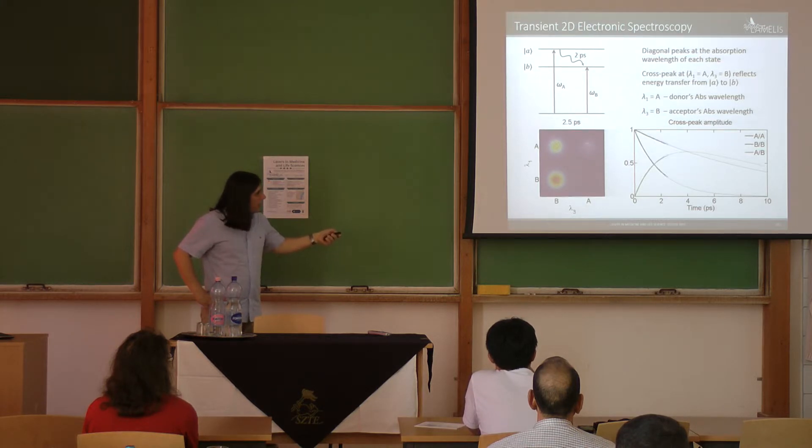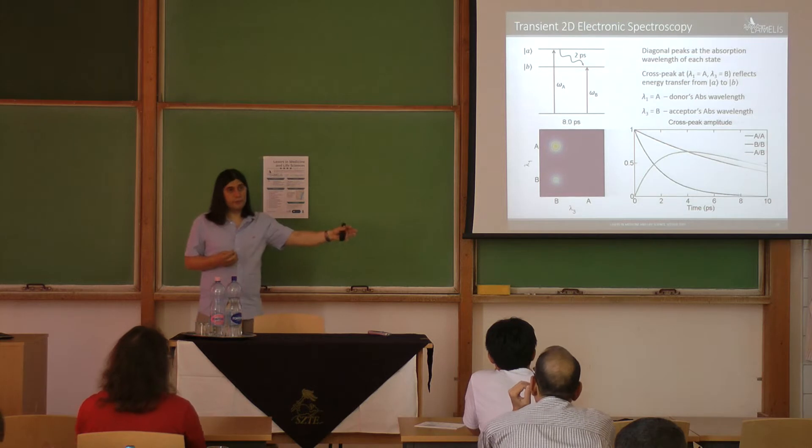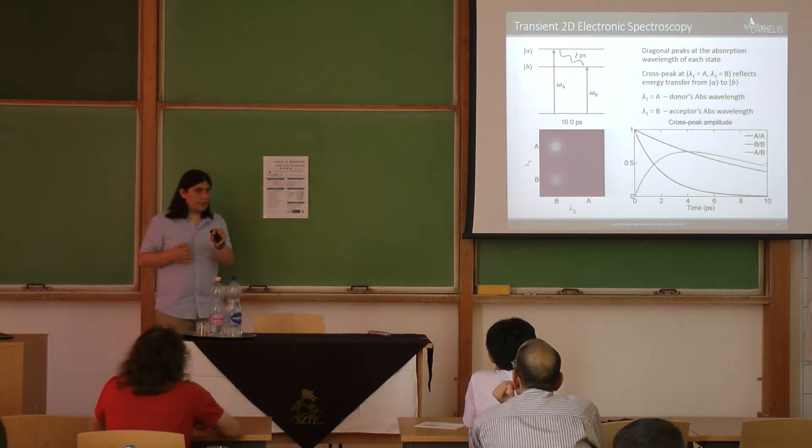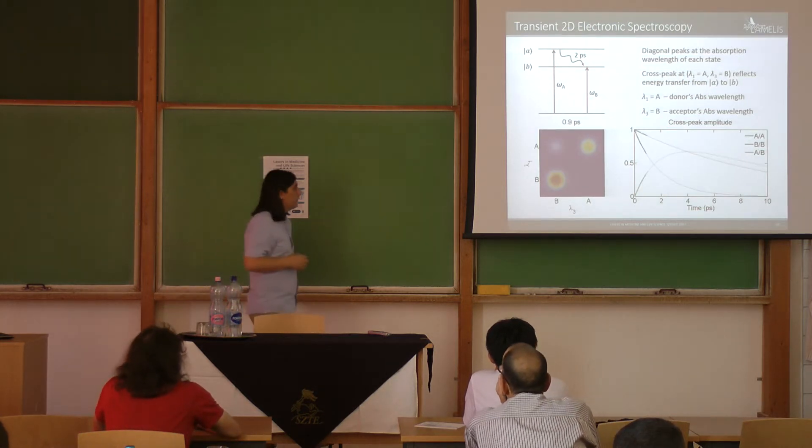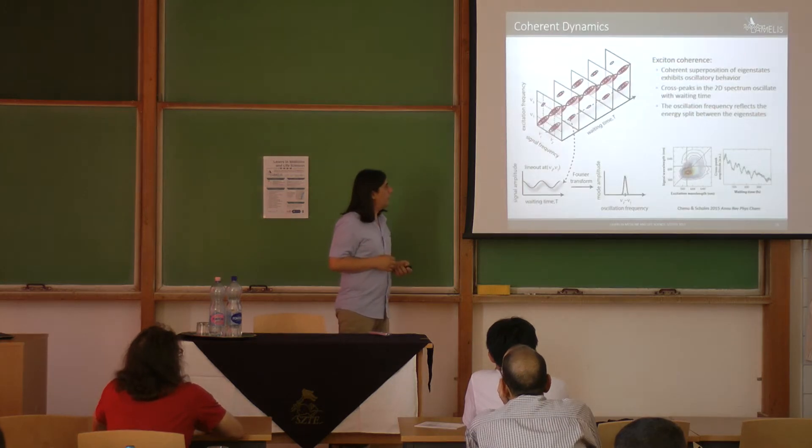This diagonal peak, that's the initial state, it will disappear. Instead of it, the cross peak will appear because the energy moved from the absorption position to the emission position. So that's the principle.